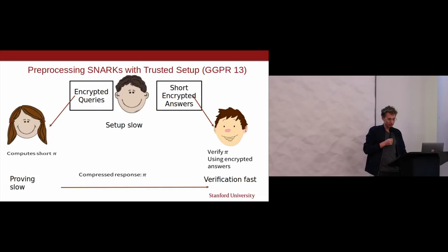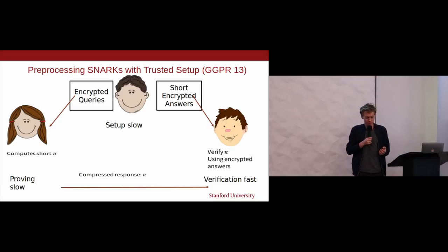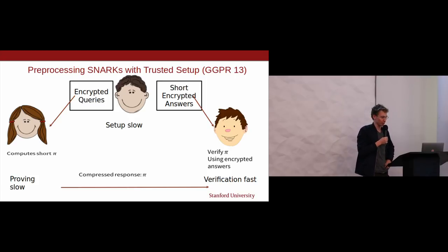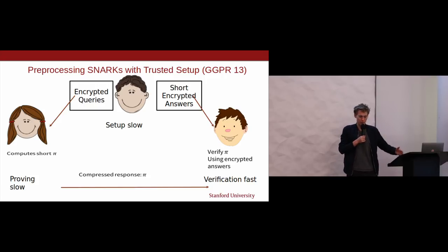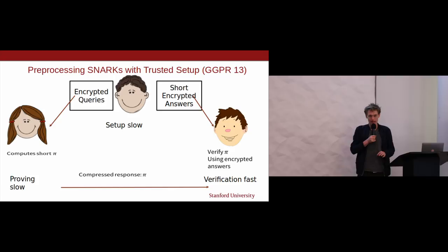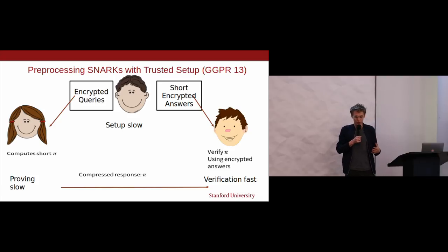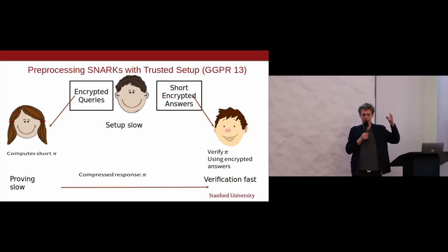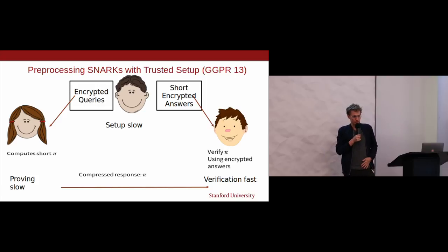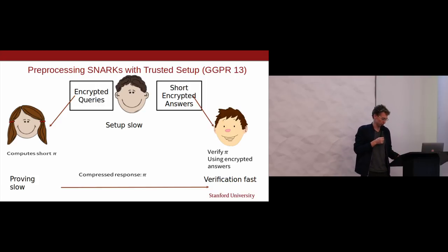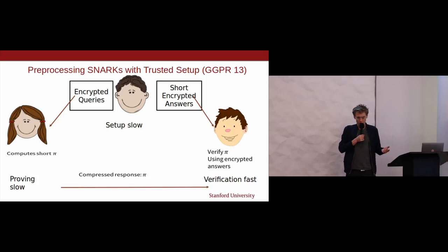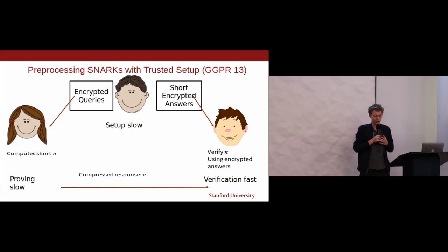They didn't require a trusted setup, which is nice. Peter, Andrew, and Greg approached us over a year ago with this problem — the proofs were annoyingly large and would have blown up transaction sizes, also for Mimblewimble. They asked: can you come up with a better range proof? The one obvious candidate for small proof size is SNARKs.